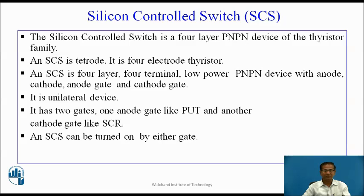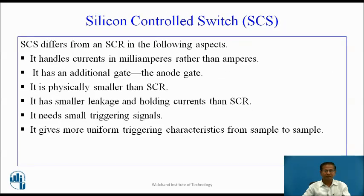An SCS can be turned on by either gate. An SCS differs from an SCR in the following aspects: it handles currents in milliamperes rather than amperes; it has an additional gate, that is the anode gate; it is physically smaller than SCR; it has smaller leakage and holding current than SCR; it needs small triggering signals; and it gives more uniform triggering characteristics from sample to sample.